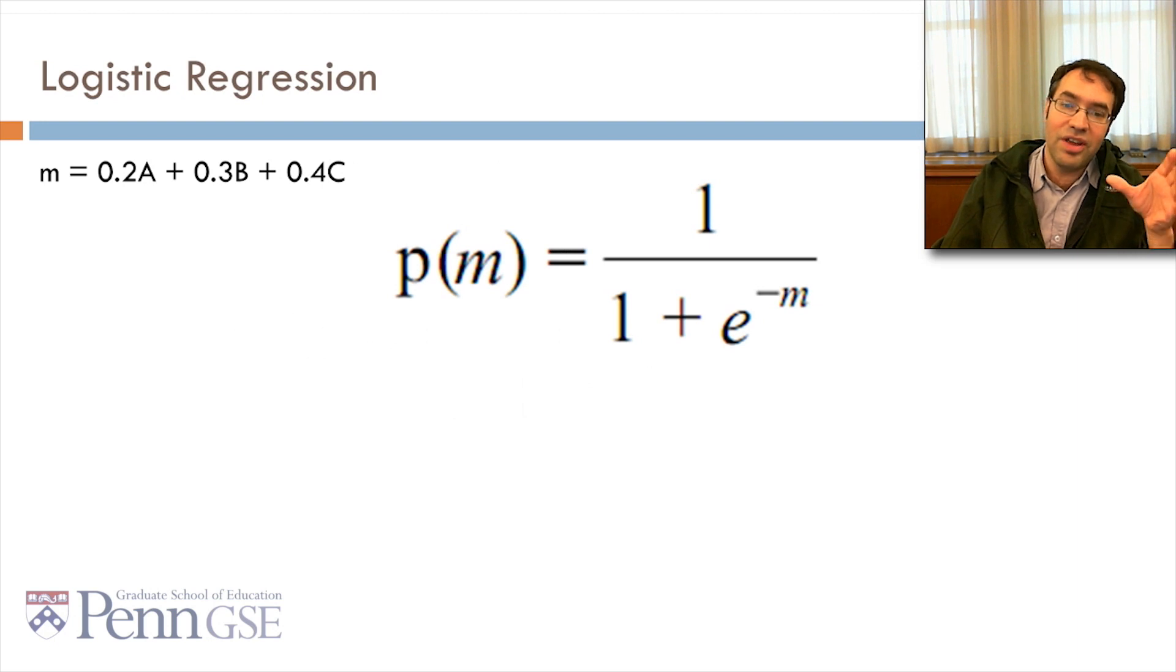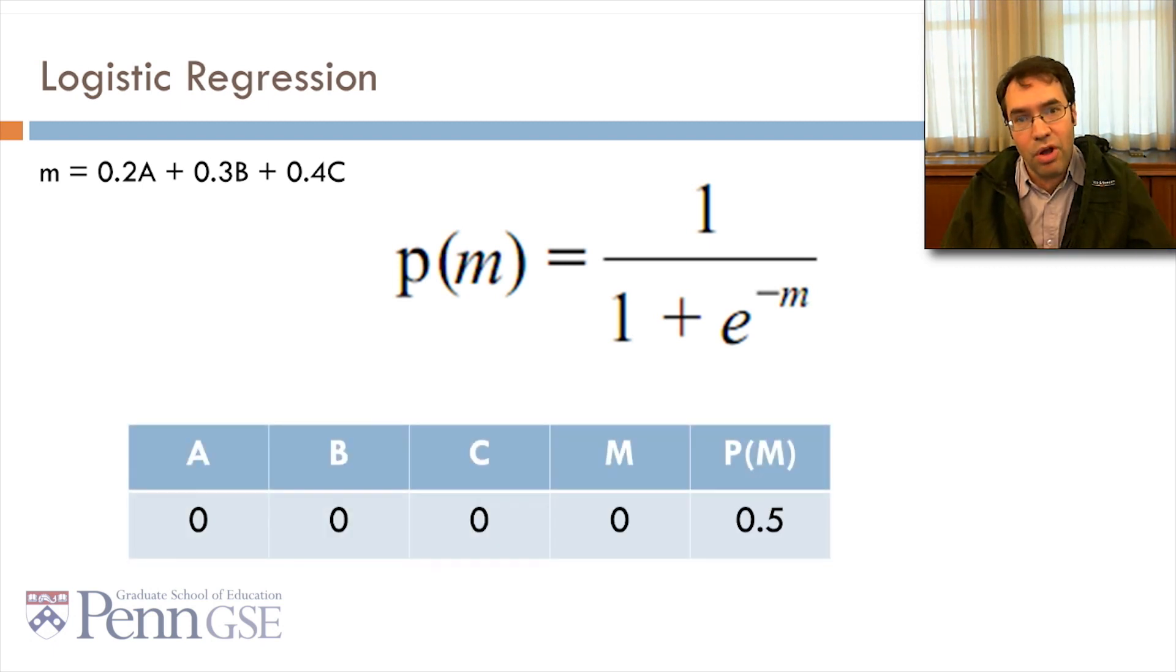Let's try that out. Let's say we have the function m equals 0.2a plus 0.3b plus 0.4c. So, if they're all 0, then m is going to be 0, and consequently, p of m is going to be 1 over 1 plus e to the 0, which, if you work it out, turns out to be 0.5. Try it in Excel.